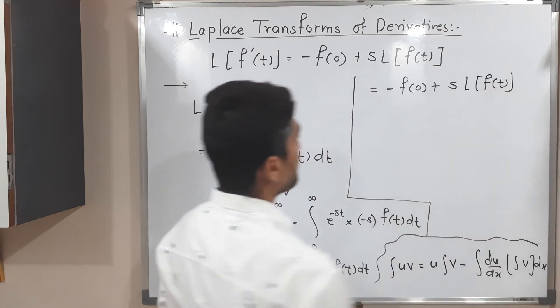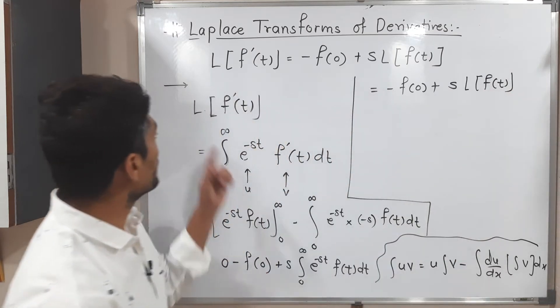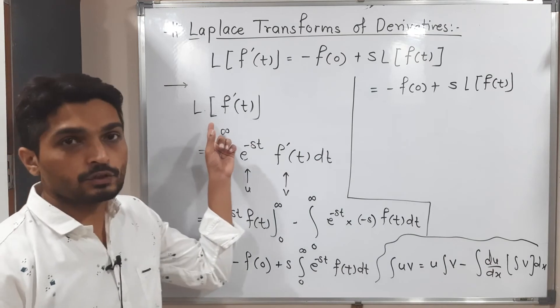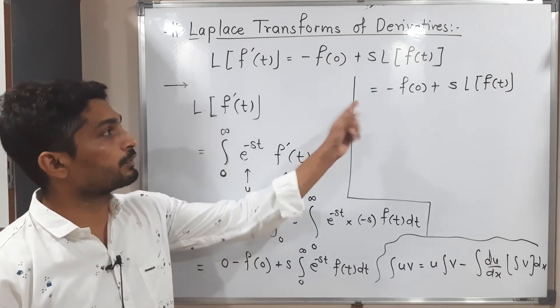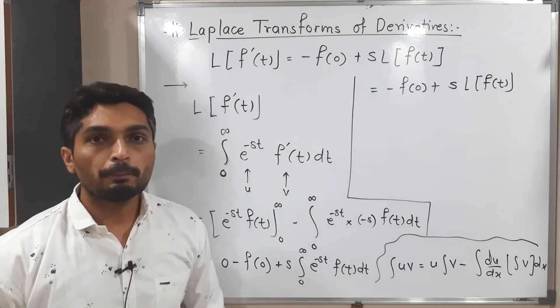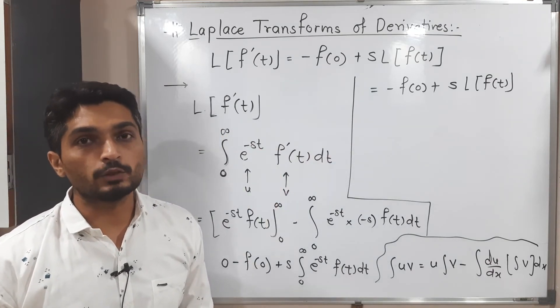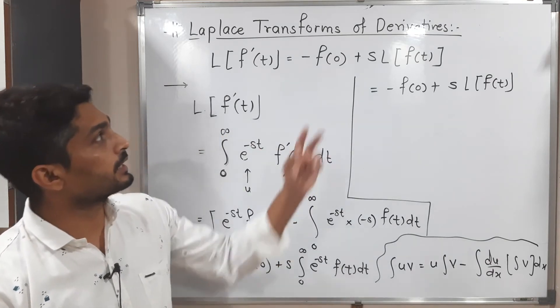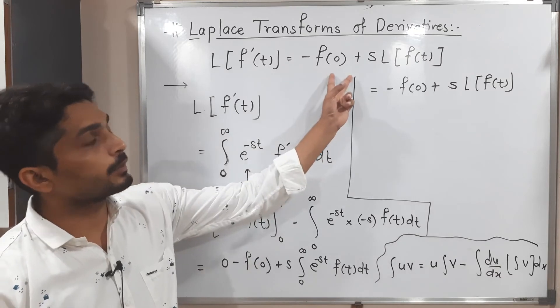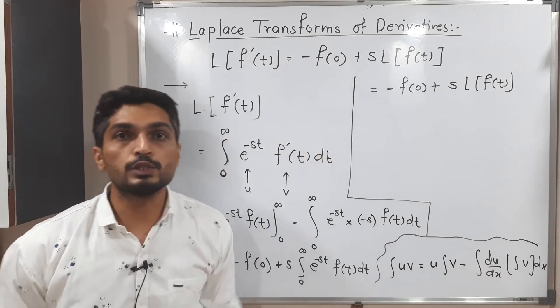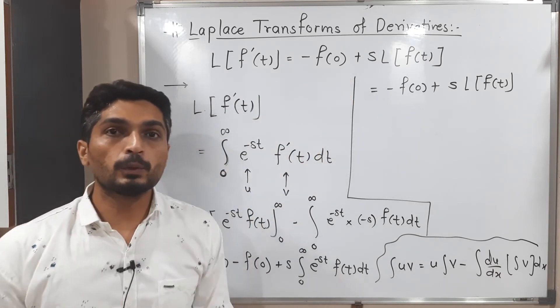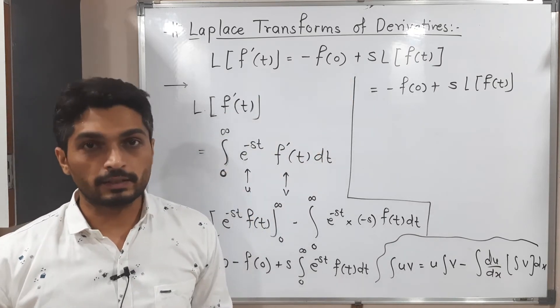So we started with L of F dash of T, and finally what we have got is: minus F of 0 plus S into L of F of T. This is the required result, and in this way we prove it.